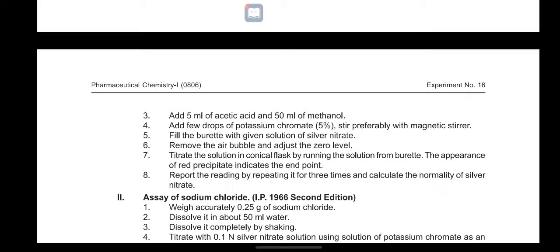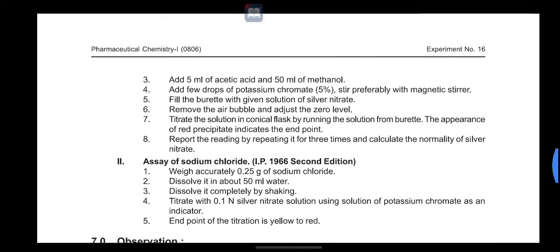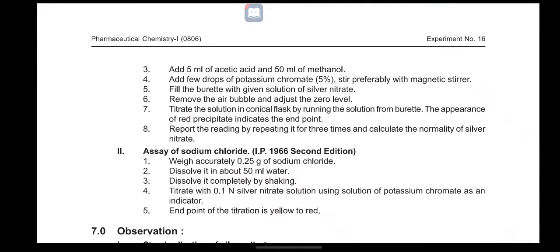Stir, preferably with a magnetic stirrer. Fill the burette with the given solution of silver nitrate, remove air bubbles, and adjust to zero level. Titrate — run the solution from the burette (silver nitrate) into the conical flask, then calculate the normality. Repeat the procedure for triplicate readings.